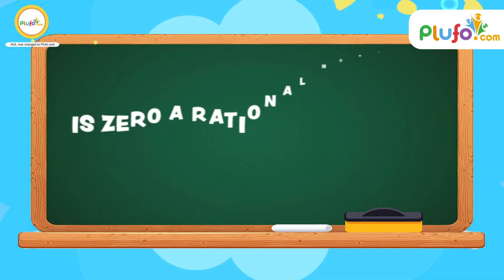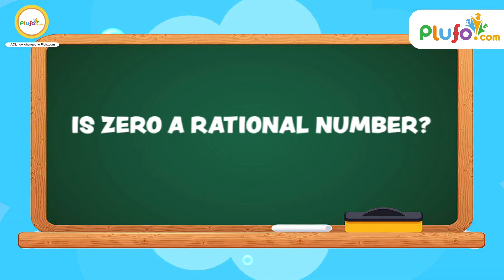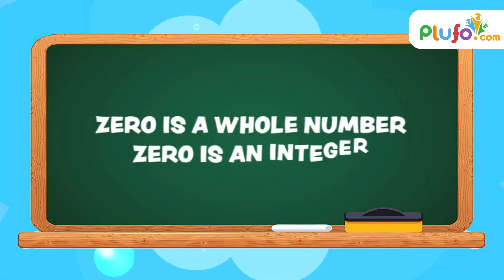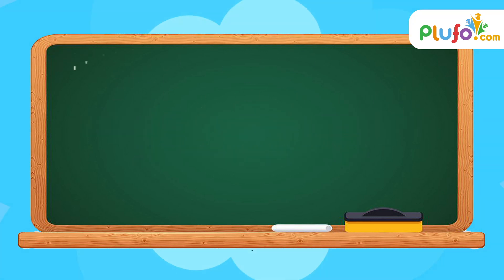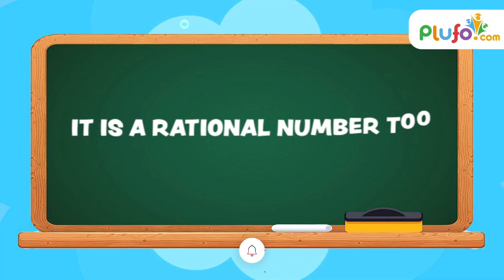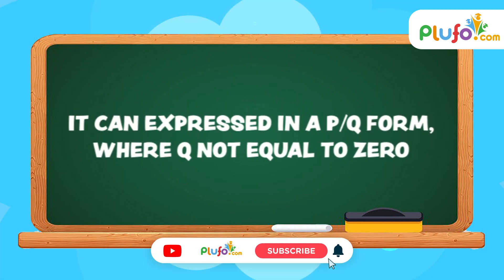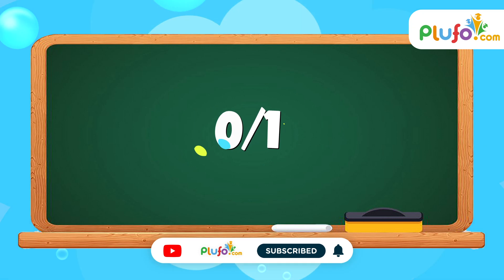Can you tell me if 0 is a rational number? Well, 0 is a whole number, 0 is an integer, and it is a rational number too, because it can be expressed in p/q form as 0/1.